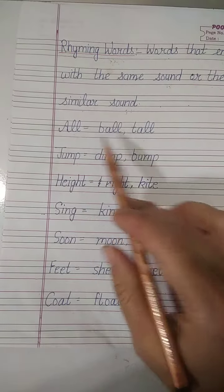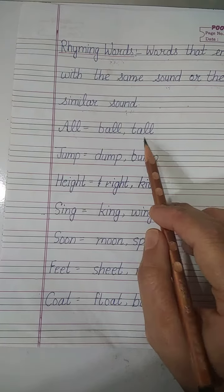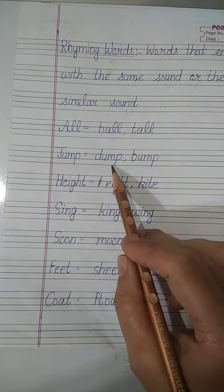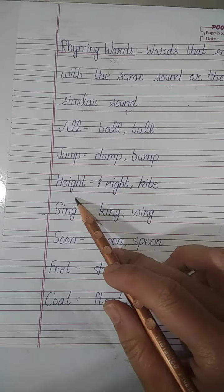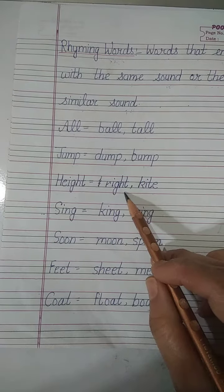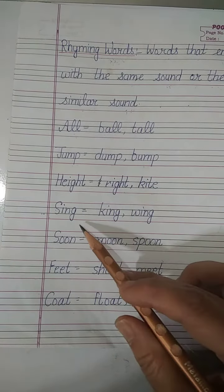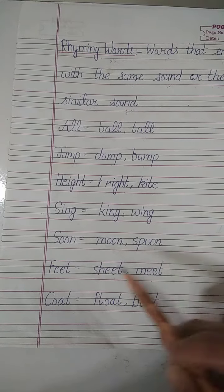All, ball, tall. Jump, dump, bum. Height, right, kite. Sing, king, wing.